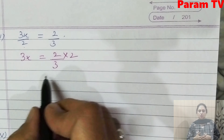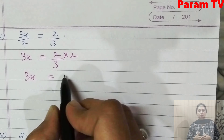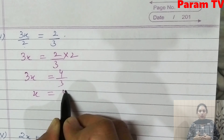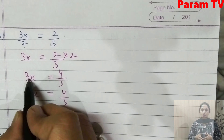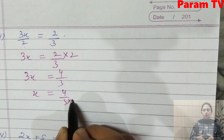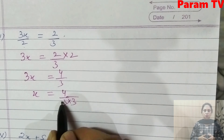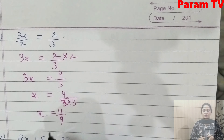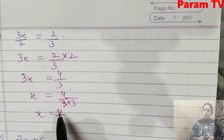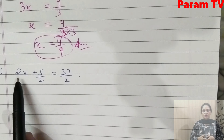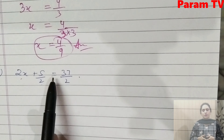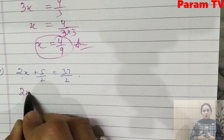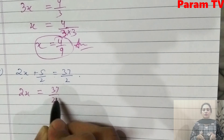The fourth part is 3x/2 = 2/3. So 3x = 2/3, and since 2 is dividing here, it goes to the other side. So 3x = (2/3) × 2 = 4/3. Then x = 4/3 divided by 3, which gives x = 4/9. This is the answer.